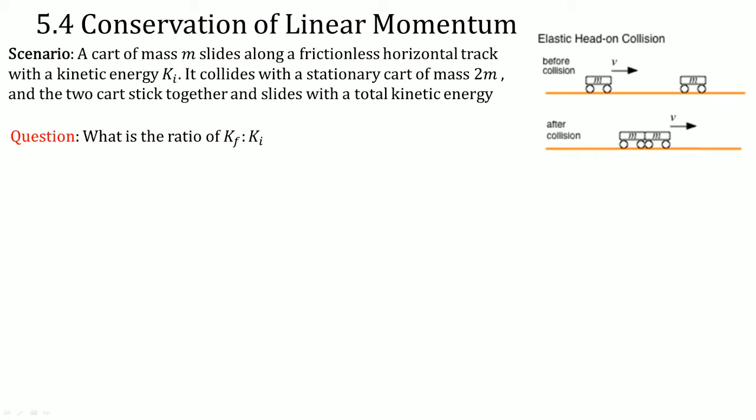That means what is the ratio of the final kinetic energy to the initial kinetic energy. We'll start by looking at the conservation of momentum. The initial momentum is equal to the final momentum. This is the equation for conservation of a perfectly inelastic collision because the two masses get stuck together.